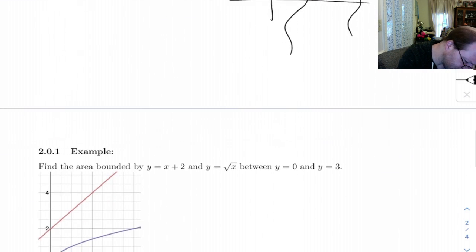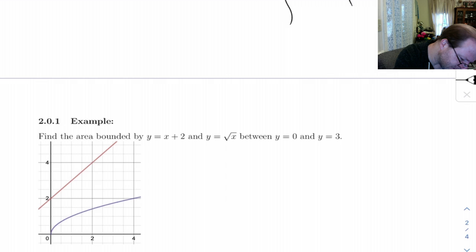So let's come down here and look at an example. Find the area bounded by y equals x plus 2 and y equals square root of x between y equals 0 and y equals 3.